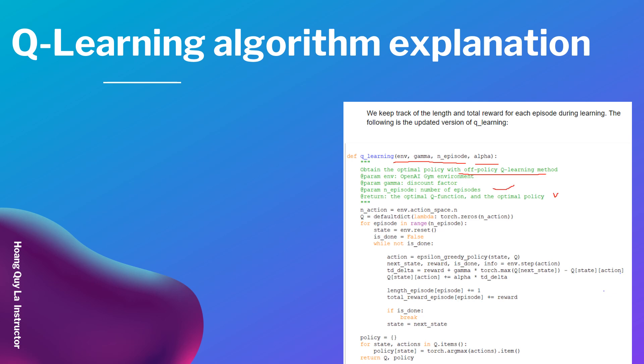The return will be the optimal Q function and the optimal policy. We've got the number of actions equal to environment.action_space.n. Then we make a default dictionary with lambda returning zeros of n_action.